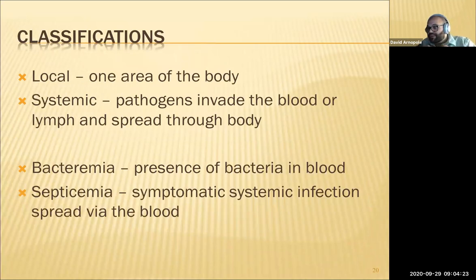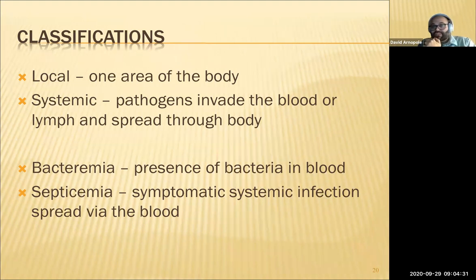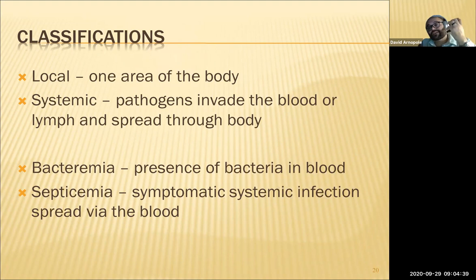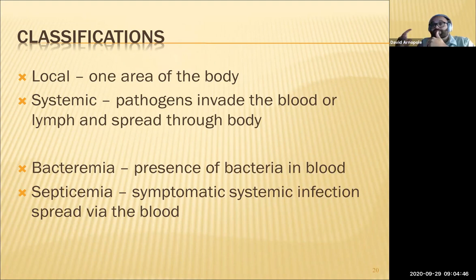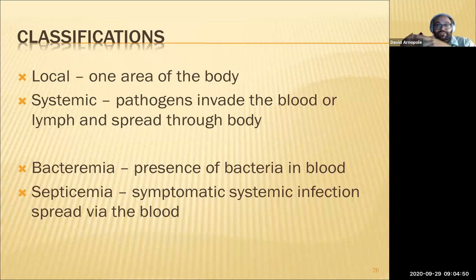Terminology: local infection means it's in one spot; systemic is general. Bacteremia is the presence of bacteria in the blood. Septicemia is a symptomatic systemic infection via the blood — once bacteria set up and start causing symptoms, that's sepsis or septicemia.